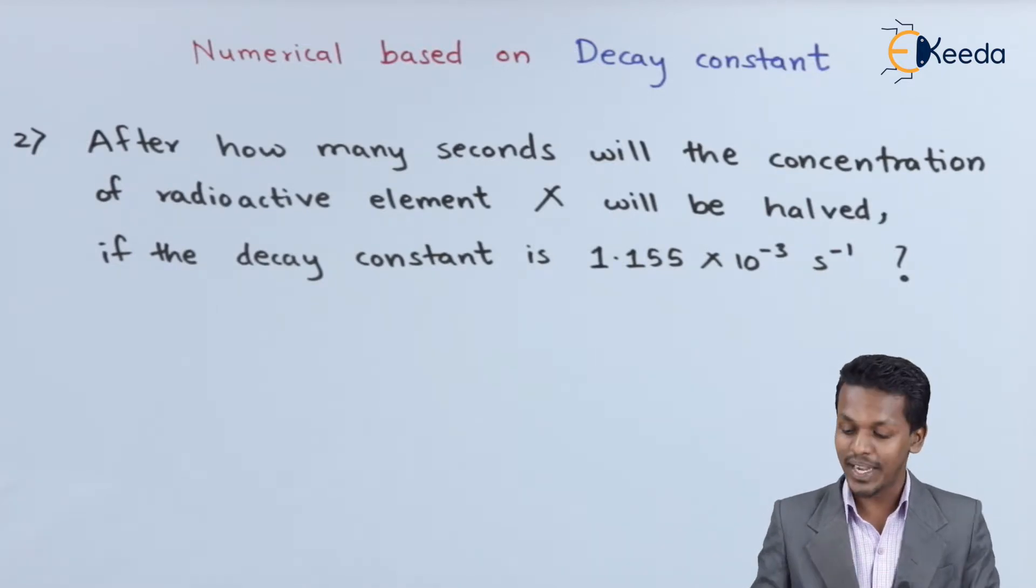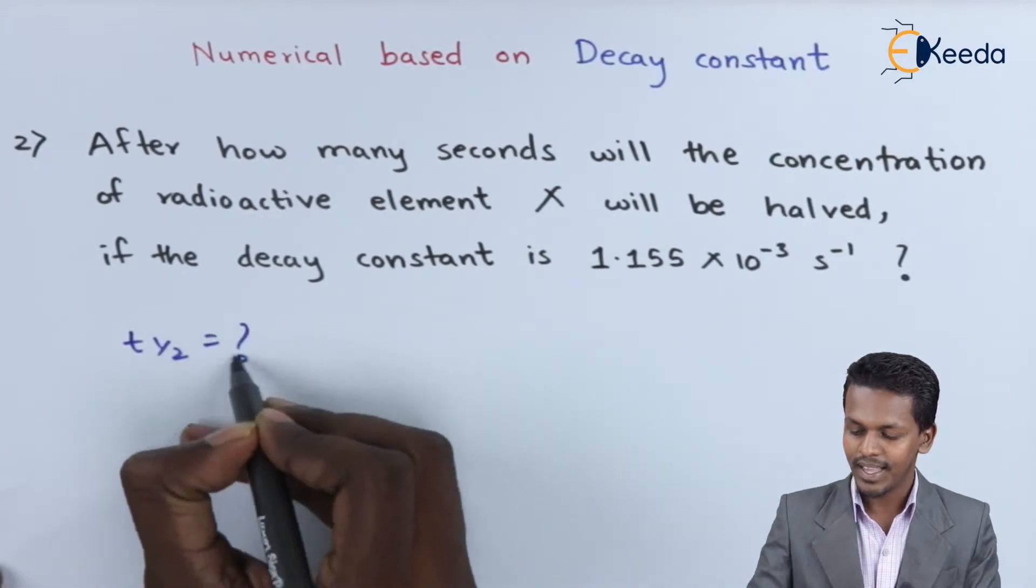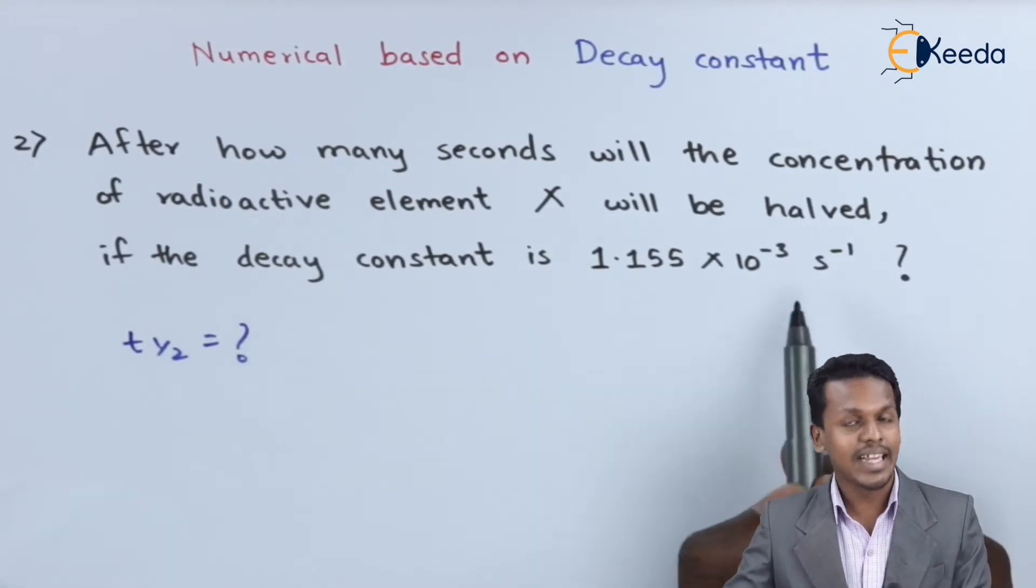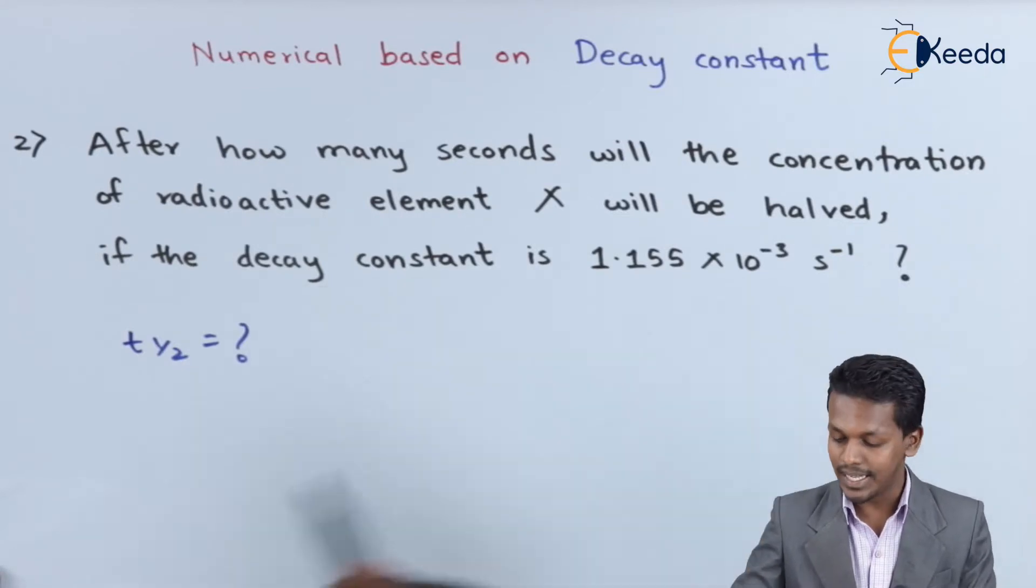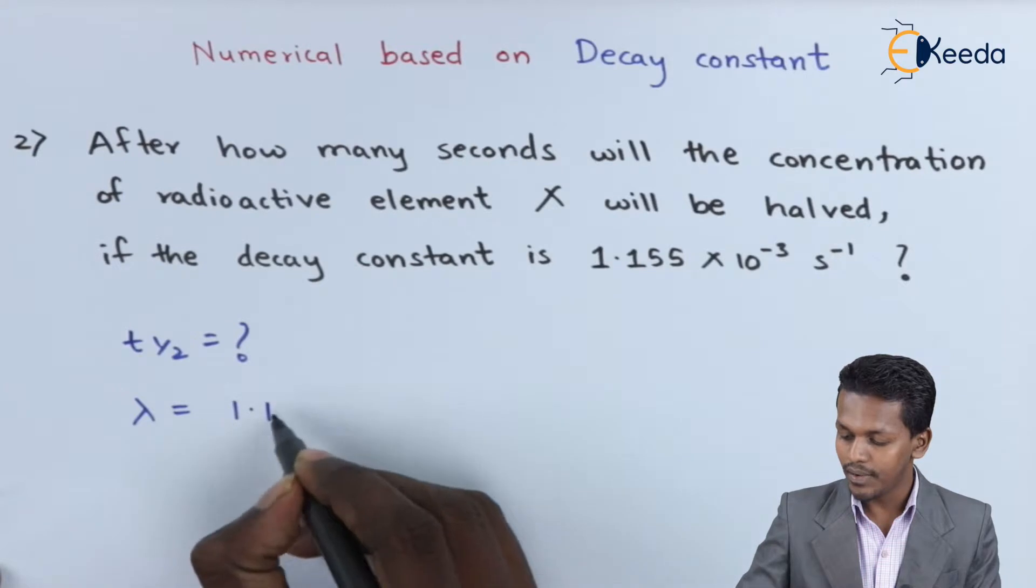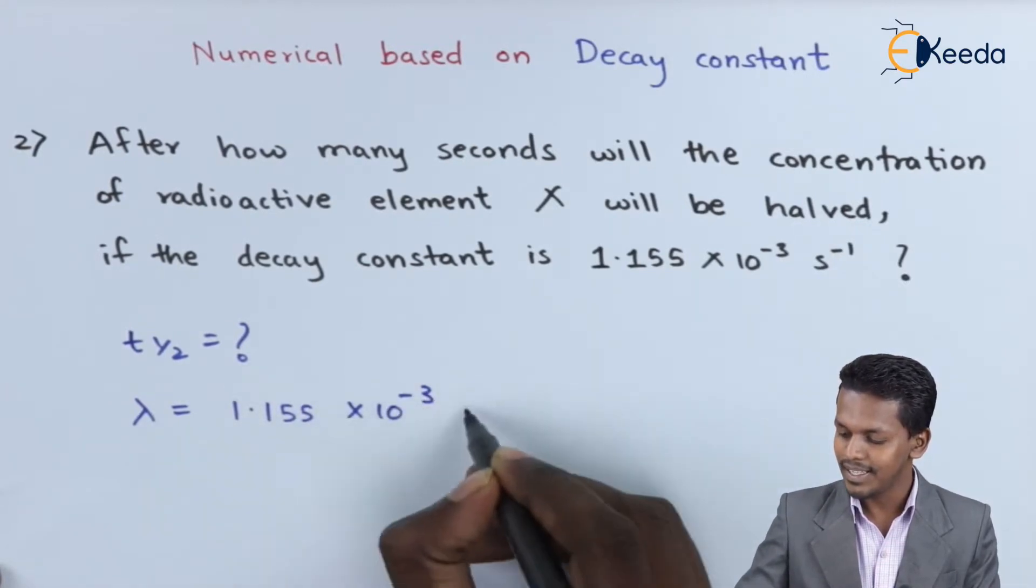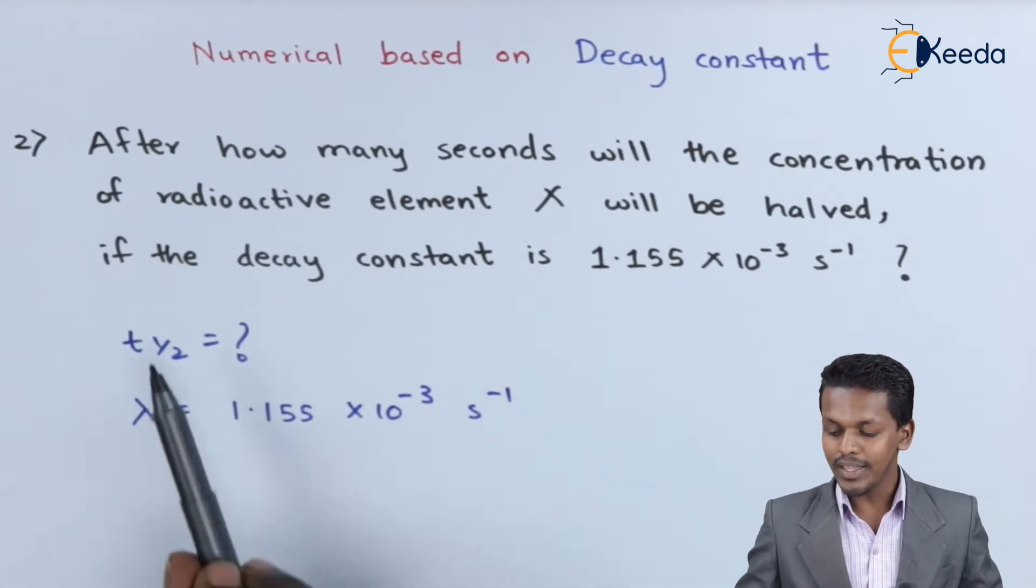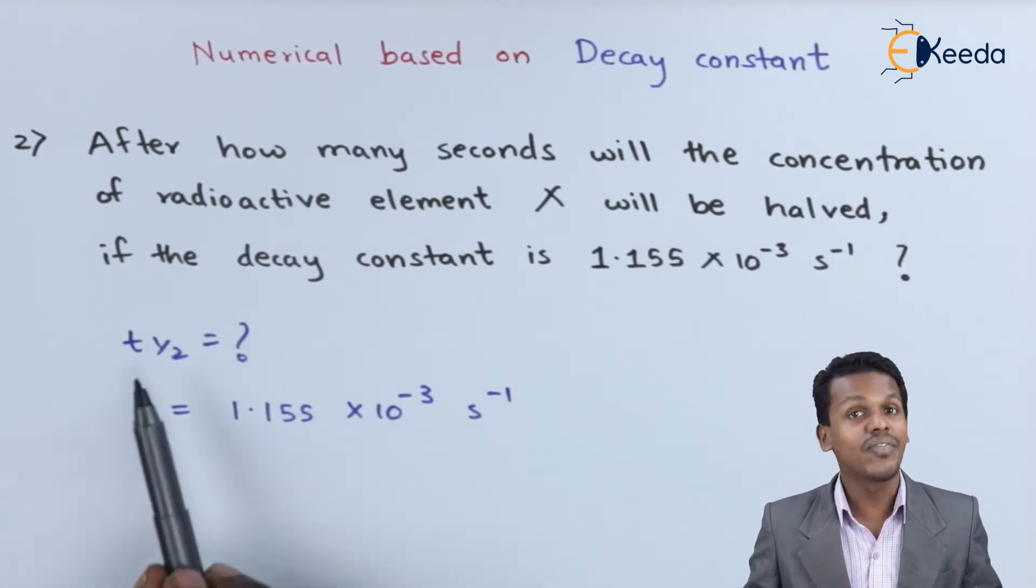So we have to find out t_half. The only data we have is the decay constant, lambda equals 1.155 × 10^-3 s^-1. Based on this data, we can easily calculate the value of t_half.